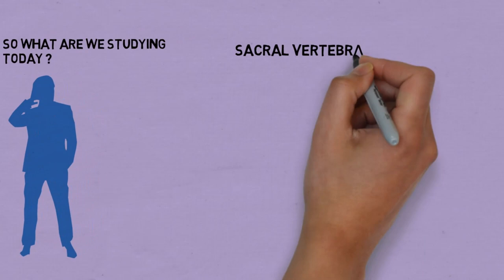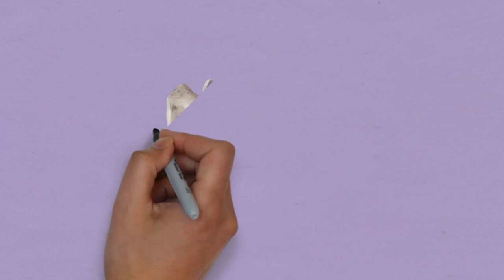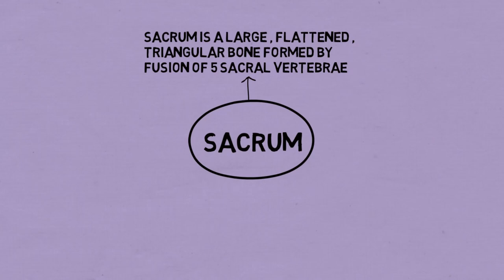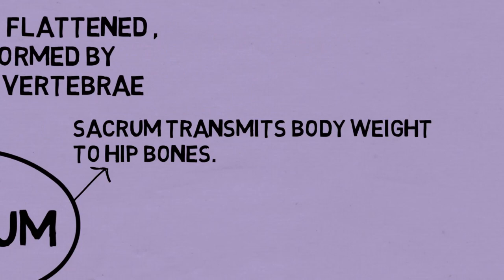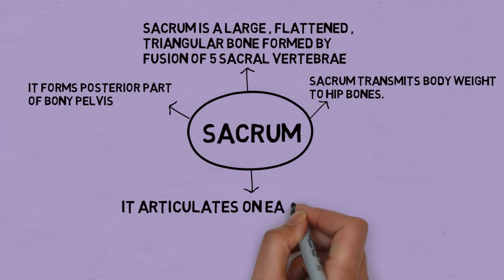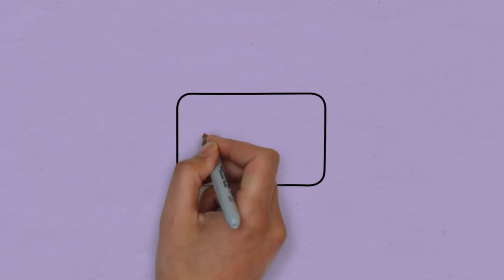Let's see the three-dimensional structure of sacrum. This is the dorsal surface of sacrum; we'll discuss that later. First let's discuss some basics. Sacrum is a large flattened bone formed by the fusion of five sacral vertebrae. Sacrum transmits the body weight to the hip bone, forms the posterior part of the bony pelvis — the region between the abdomen and the thighs — and articulates on each side with the corresponding hip bone to form the sacroiliac joint.